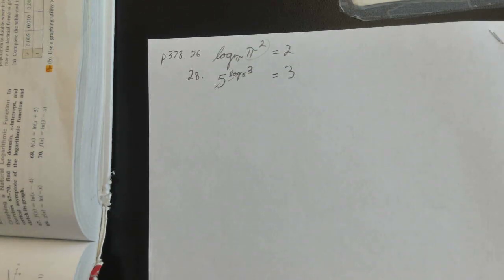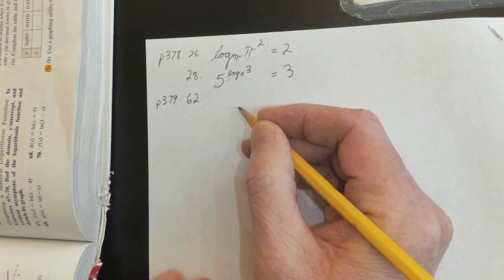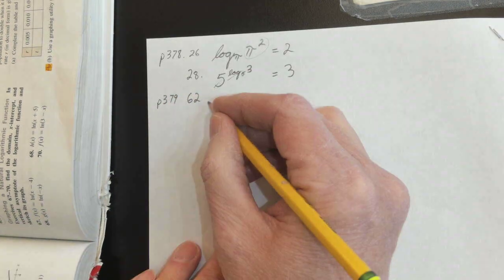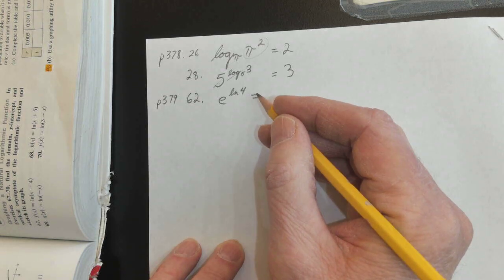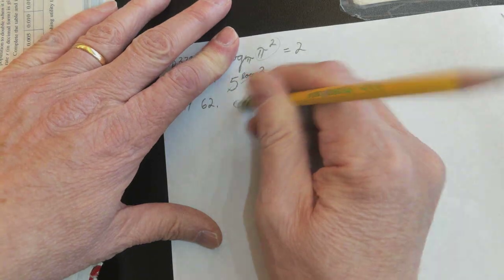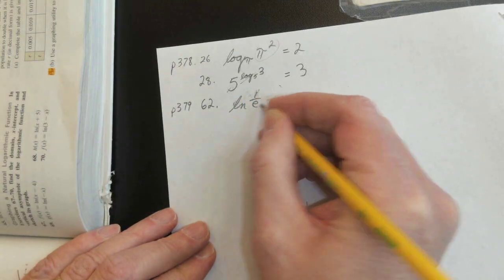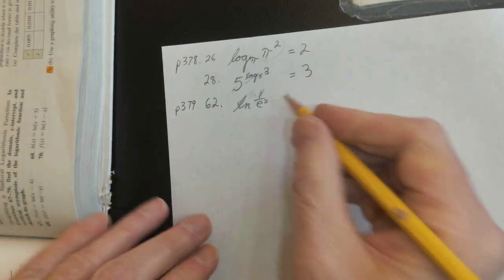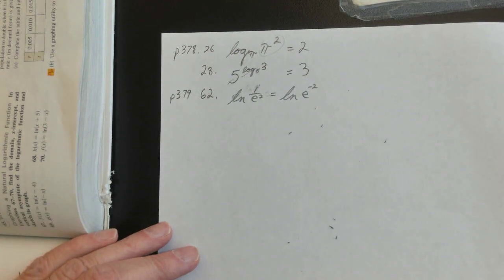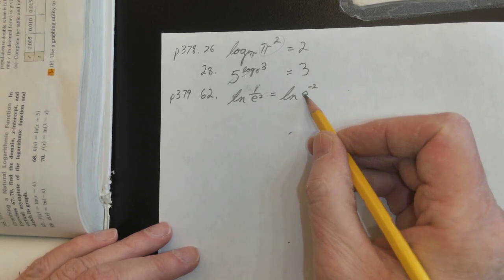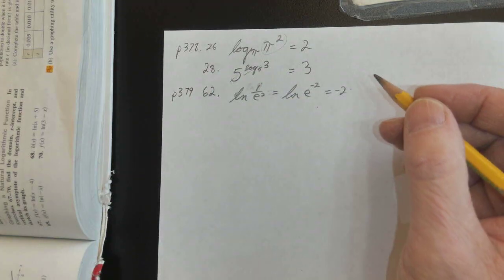Next one is page 379, number 62. When I rewrite that, I would write natural log of e to the negative second power. Natural log of e to the negative second power — this is log base e, and this is e to the negative second power. That's the exponent: negative 2.